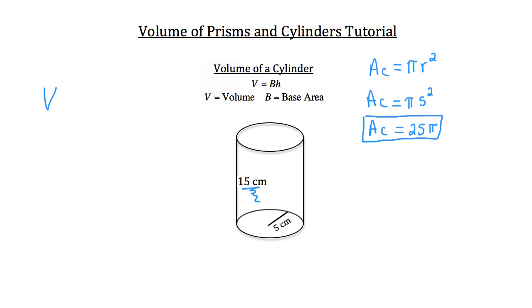So volume of a cylinder is equal to the area of the base, in our case 25 pi, times the height, 15. So 25 times 15 is 375. So the volume of our cylinder is 375 pi centimeters cubed.